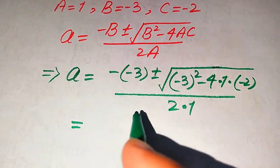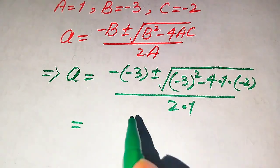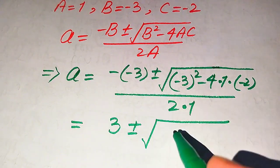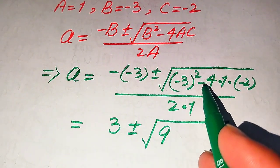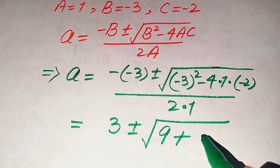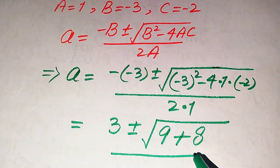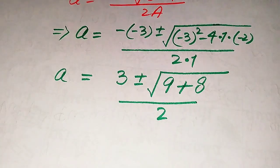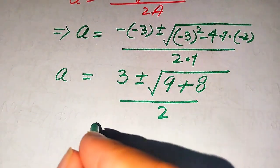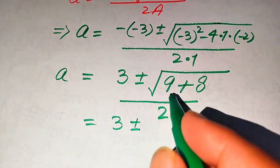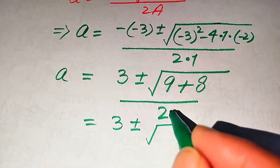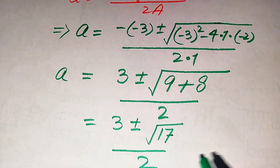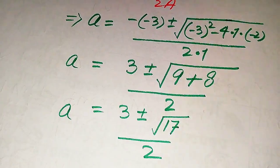Simplifying: negative times negative 3 becomes positive 3, so we have 3 plus or minus square root of 9 — since (minus 3) squared equals 9 — plus 8, since minus times minus gives plus and 4 times 2 equals 8, all divided by 2. So we get 3 plus or minus square root of 17, divided by 2.